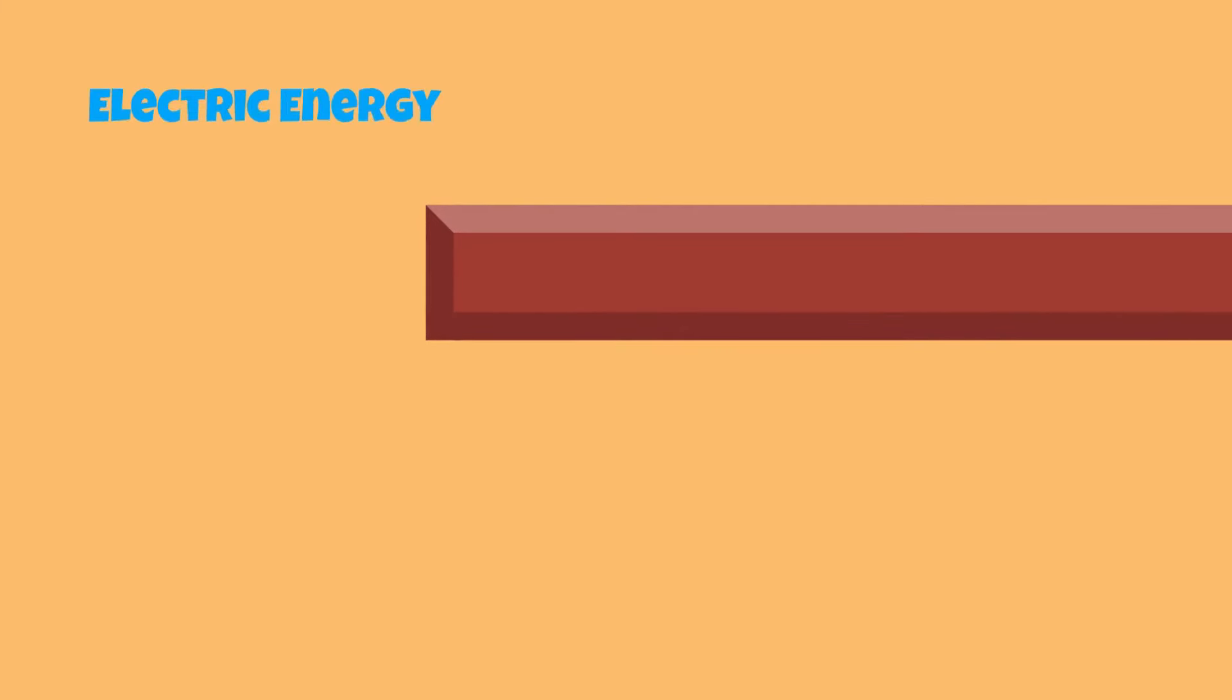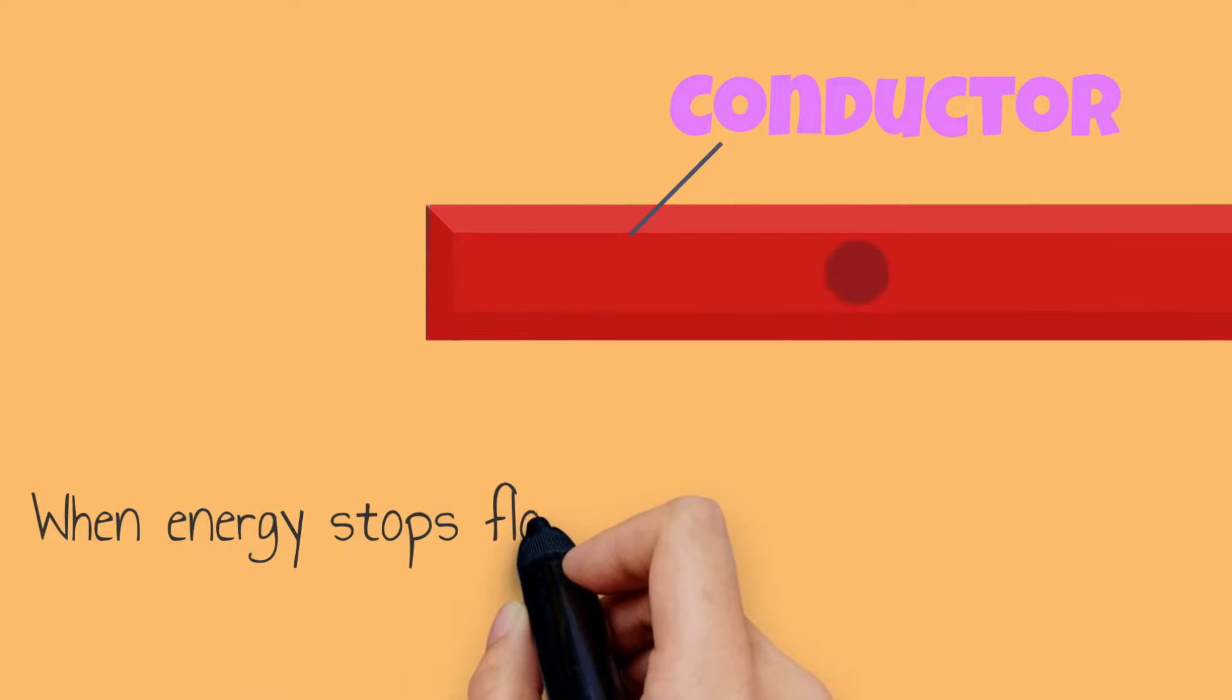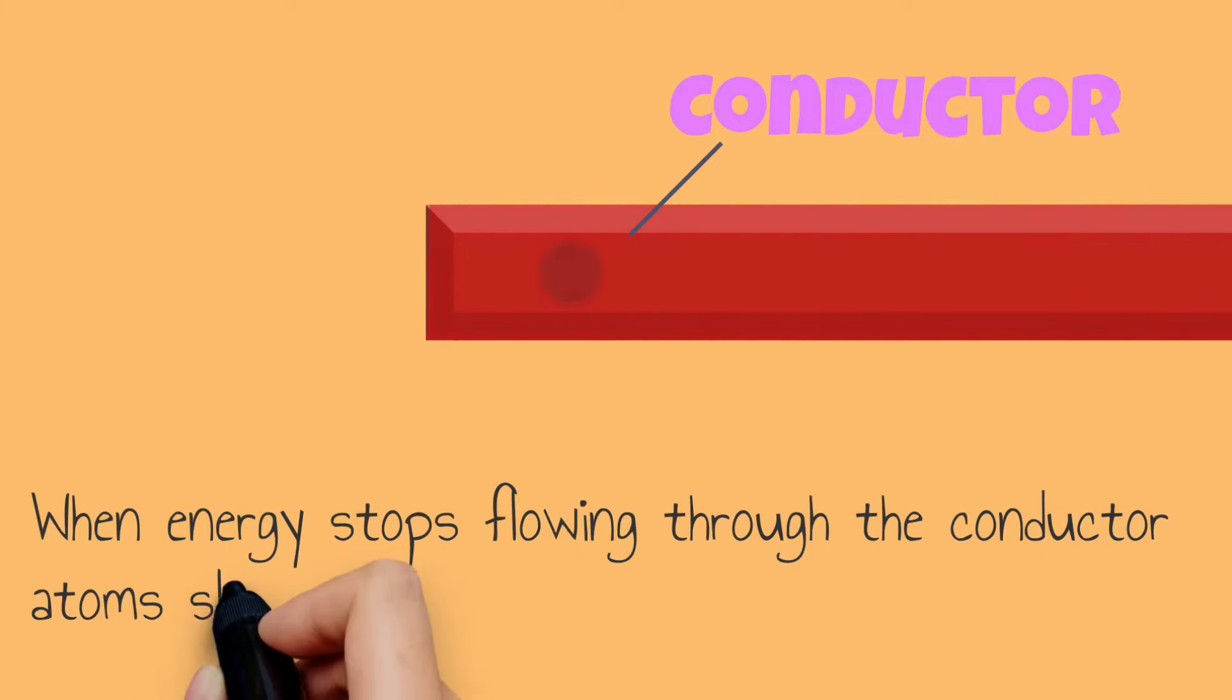This is because when electric or heat energy flow through a conductor, the atoms move quickly and it becomes hot. When energy stops flowing through the conductor, the atoms slow down and it starts to cool down. Let's review what we learned.